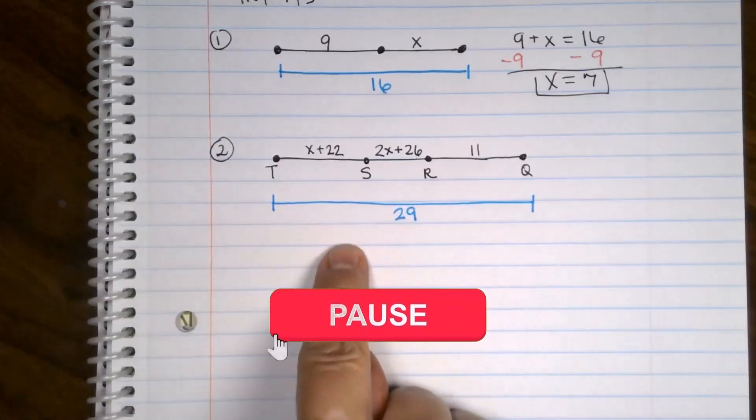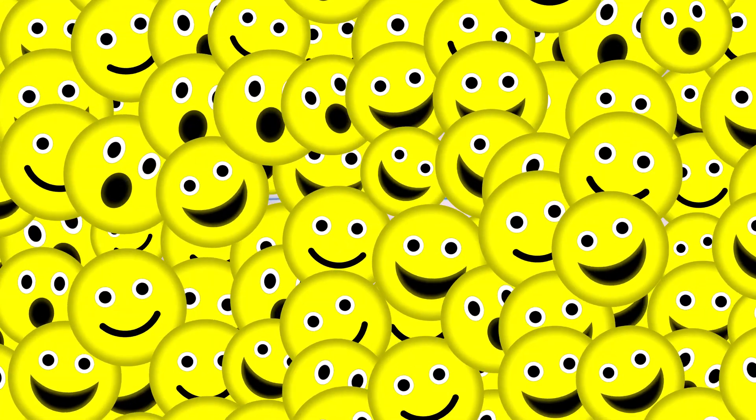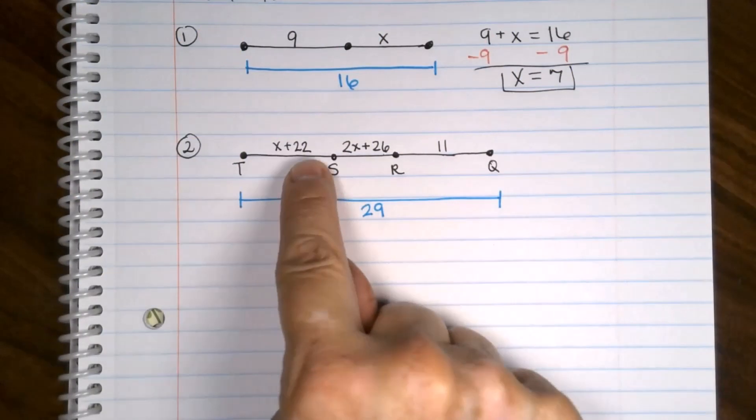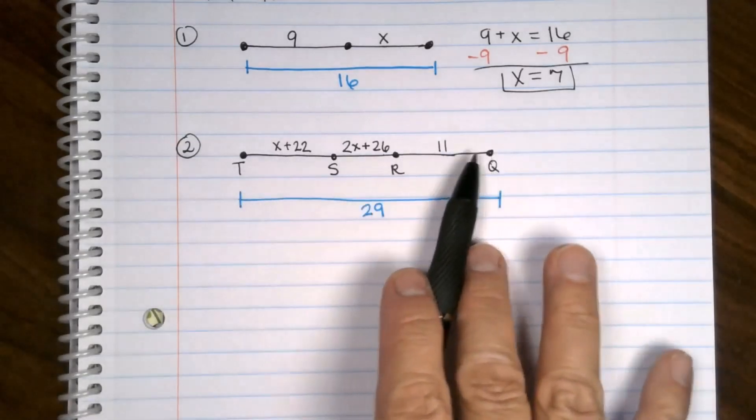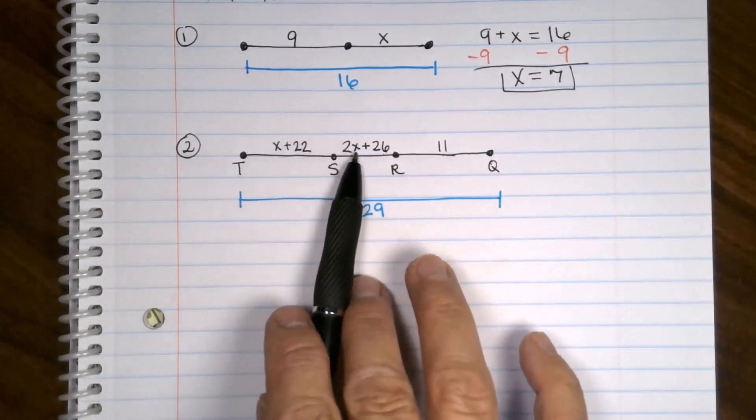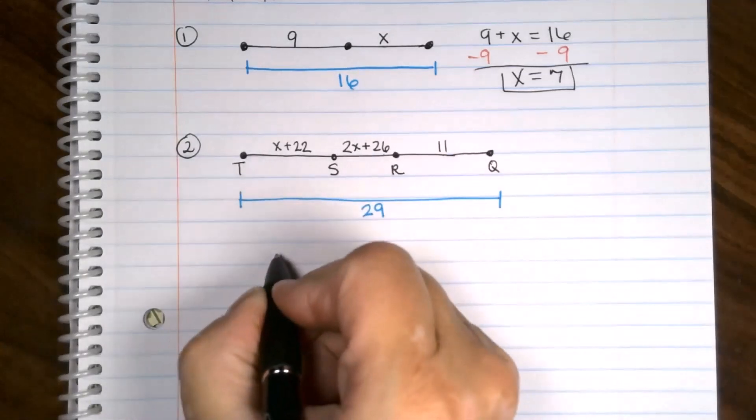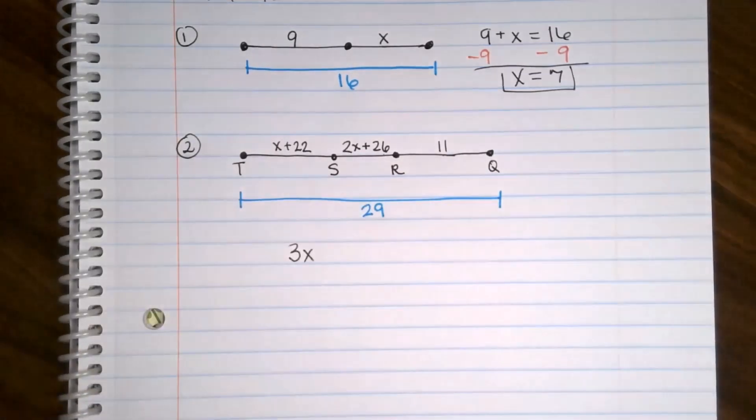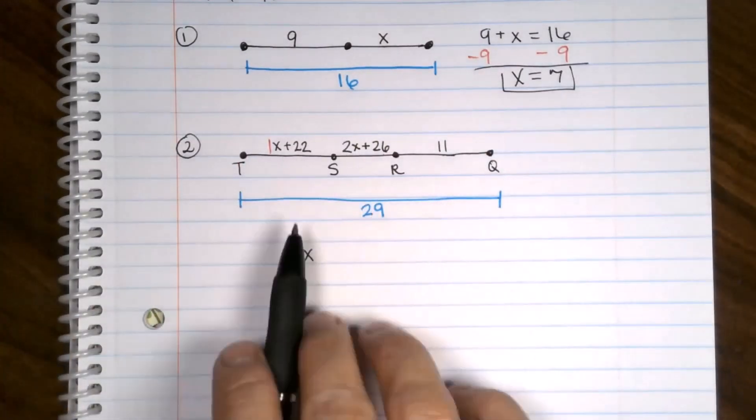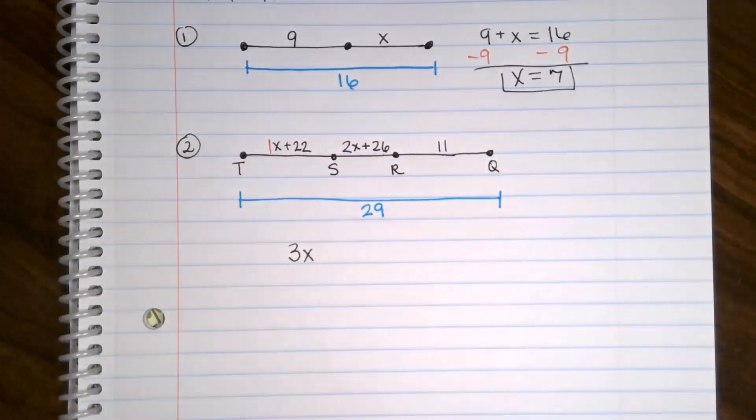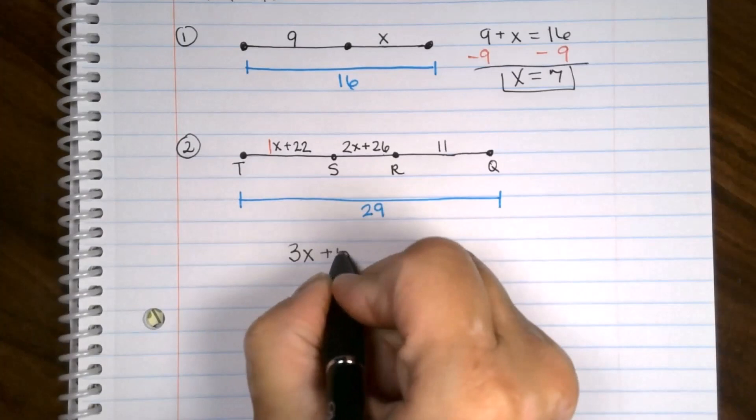All right. Here comes your second one. Here is your second try it. Again, pause. Copy the problem in your notebook and give it a go. And we'll be right back. The entire length is 29. That means X plus 22 plus 2X plus 26 plus 11 equals 29. Now you can write that all out and then combine like terms, or you could do it this way, which is I'm going to combine the terms as I go. So this has an X in it. This has two X's in it. There is no X here. 1X plus 2X. That is 3X's. Just in case you forgot, if you just see an X by itself or any variable by itself, you have to remember there's an invisible 1 in front of it. So 1 plus 2 is 3. I have three X's all together. 22 plus 26 is 48. And 48 plus 11 is 59. And it equals 29.